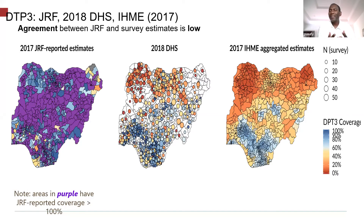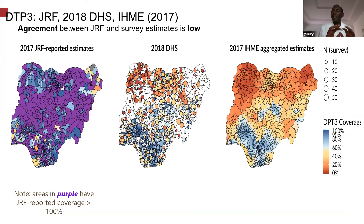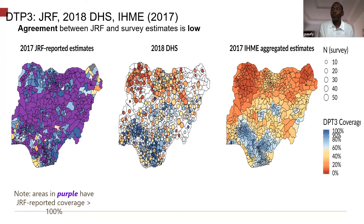The key question to ask is why there have consistently been huge gaps between the admin and survey data. A lot of innovations have focused on the technical component of the problem. We noted that the same facility reporting 100% in admin data is the same location surveyed showing coverage below 30%. So there are some fundamental things we need to look at beyond the technical.